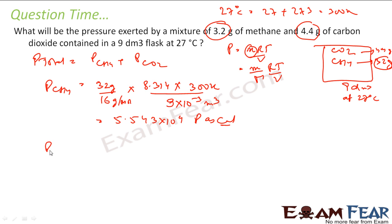This is my pressure of CH4. Let us find the pressure due to carbon dioxide. Same formula, m by M, what is the m, mass of this 4.4 grams, molar mass of carbon dioxide is 44. I will use same value 8.314, temperature is 300 K, and the value of volume is 9 to the power minus 3 meter cube. So whatever you get is 2.777 into 10 to the power 4, here also you get Pascal.